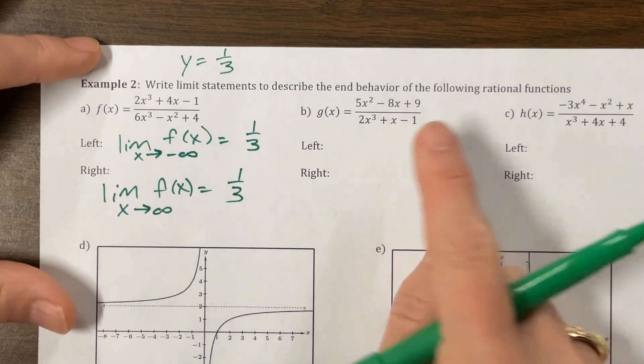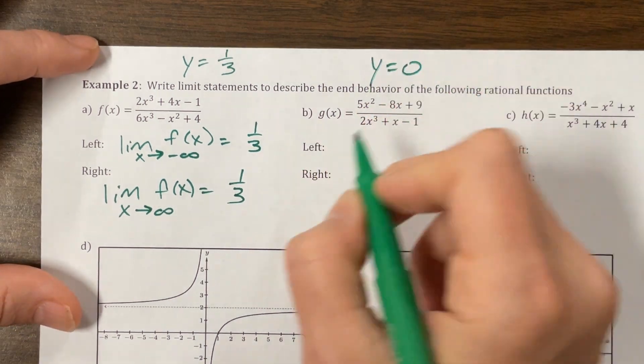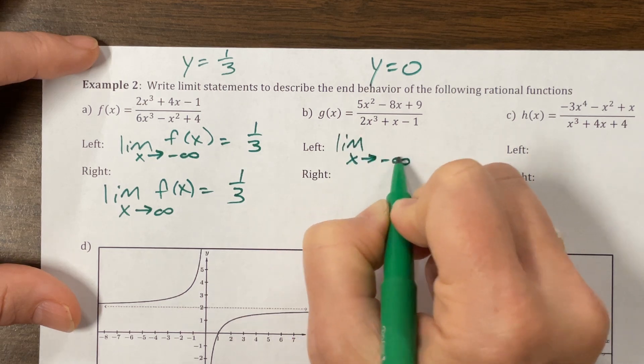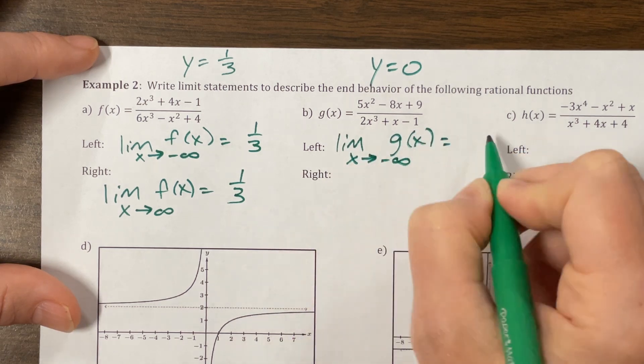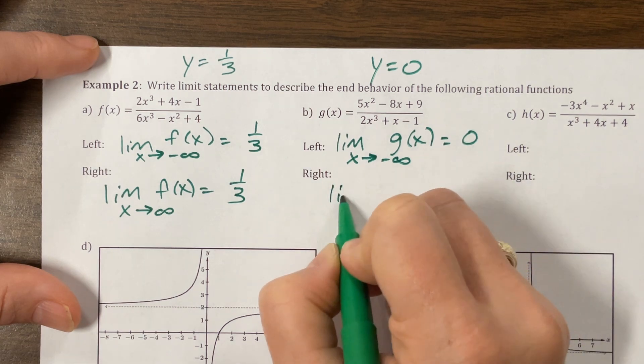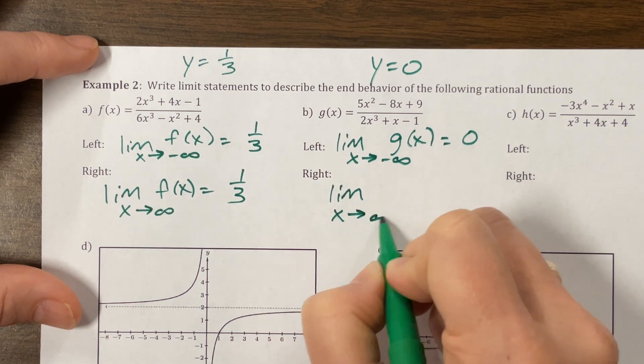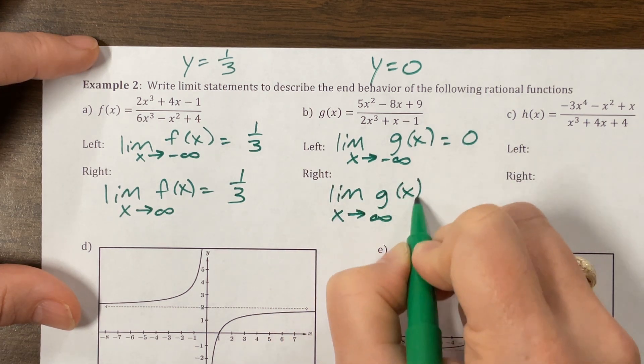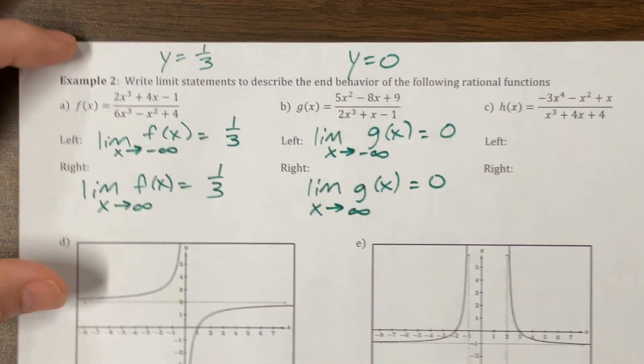The next one, we are bottom heavy. So the asymptote is y equals zero. So the limit as x goes to negative infinity of g(x) is equal to zero. From the right, going to the right, the limit as x goes to positive infinity of g(x) is still equal to zero.